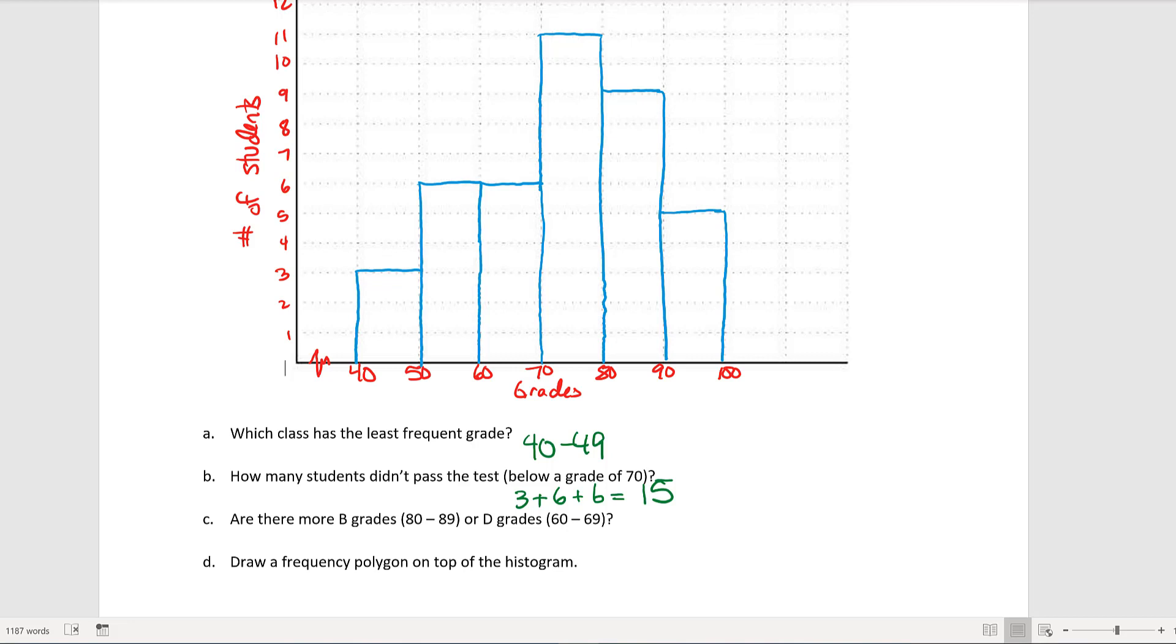Are there more B grades or D grades? So the B grades are between 80 and 89, and that looks like 9. The D grades are between 60 and 69, and that's 6. So there are clearly more B grades.